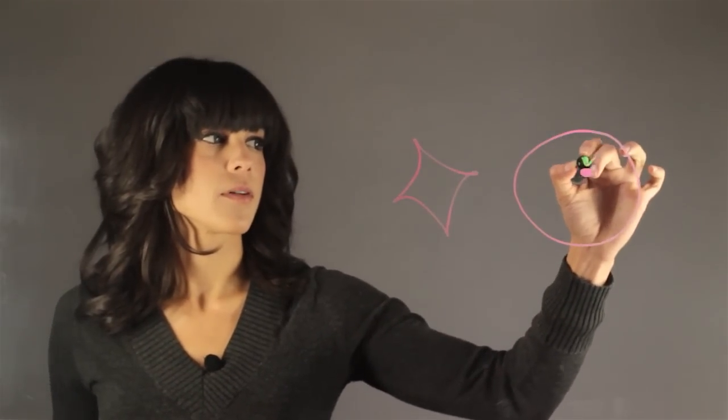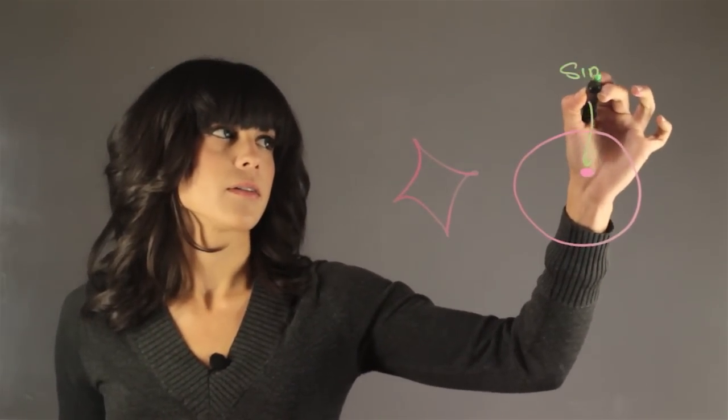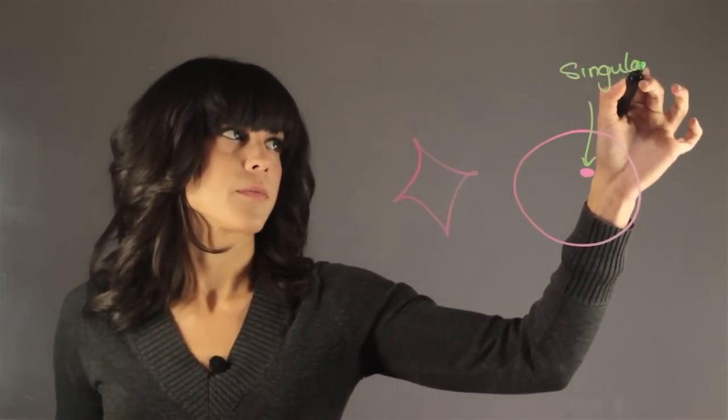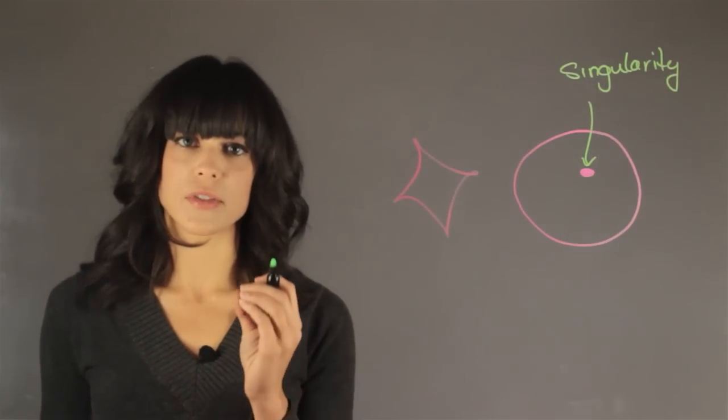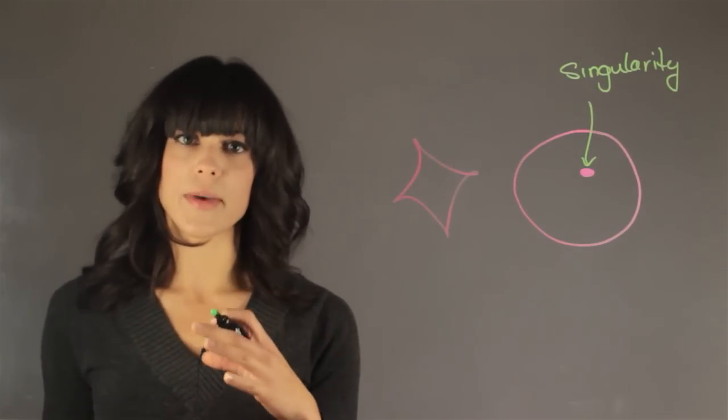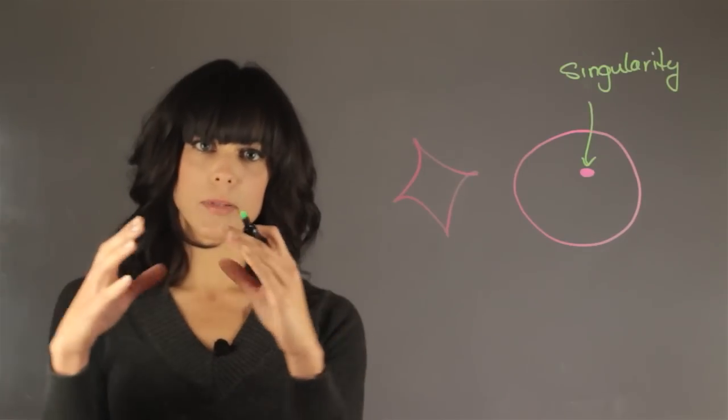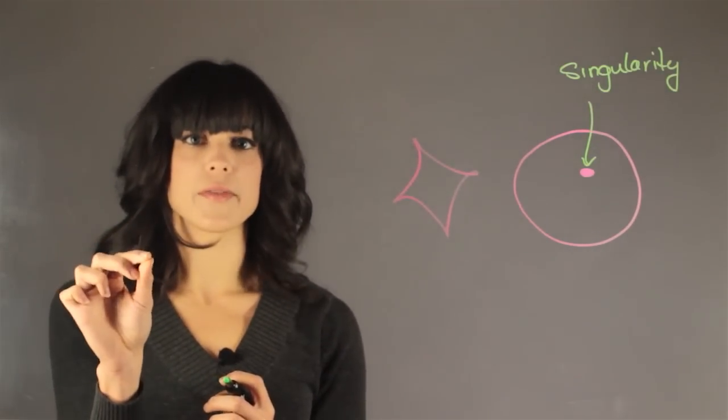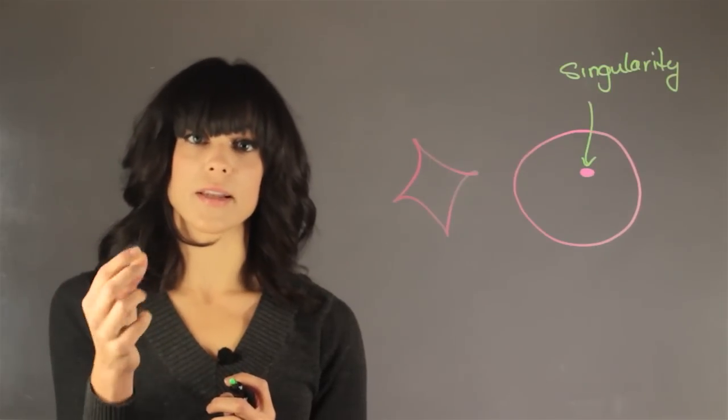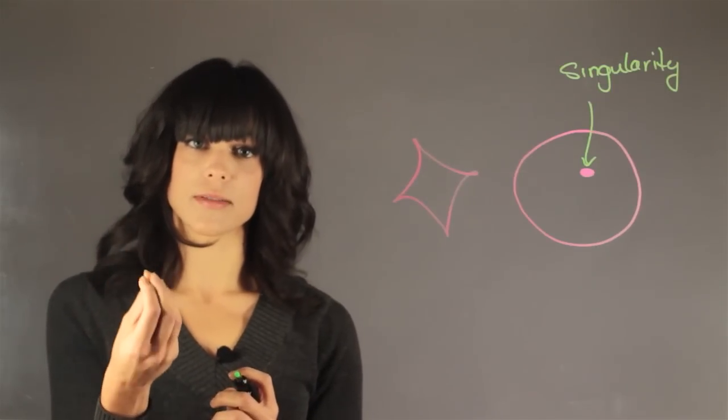So here we have our singularity, which is a very, very massive remnant of a star. So after a very massive star has died, it has imploded into a zero volume and was a point-like feature that is very, very massive. So massive that its own light has been sucked in.